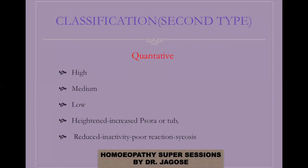The second classification is quantitative susceptibility and qualitative susceptibility. Quantitative susceptibility deals with quantity — we can classify it as high susceptibility, medium susceptibility, or low susceptibility. The susceptibility in quantity can be heightened, as seen in the psoric or tubercular miasm, or it could be reduced, showing inactivity and poor reaction, giving rise to the sycotic miasm.